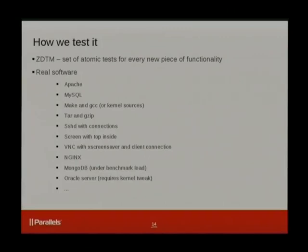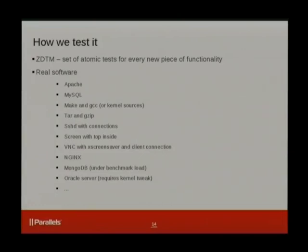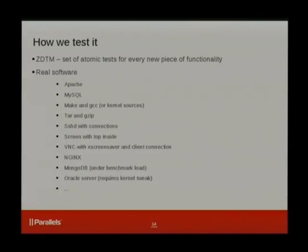In order to make sure it works, we use two ways of testing. First, we have a big set of unit tests called ZDTM — an acronym from Zero Downtime Migration. It's a set of atomic tests, each doing one small thing: one test opens a file, another maps anonymous memory, a third forks a child, a fourth creates a zombie, and so on. We run a test, it says it's ready, we checkpoint it, restore it, then ask the test whether anything has changed from its point of view — whether the file is still open, whether the mapping is still in place, whether the zombie still exists. This is very useful for regression testing.